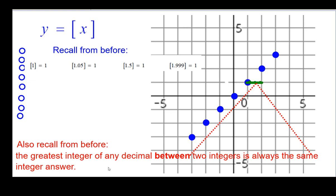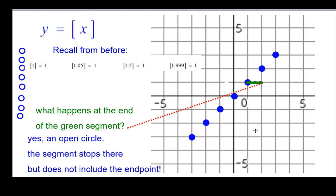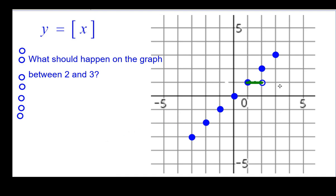So in fact, all those numbers will have the same answer. So we're going to get a bar right there. A step, okay? A green bar there. But what happens at this end of the green segment? Is that an open or a closed circle? Well, it is an open circle because the segment stops there, but it doesn't include the end point because as soon as I get to 2, the greatest integer of 2 jumps up to 2. So it's an open circle.